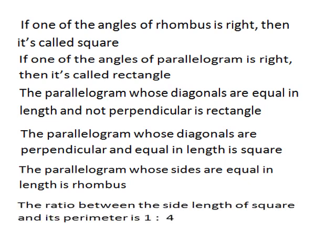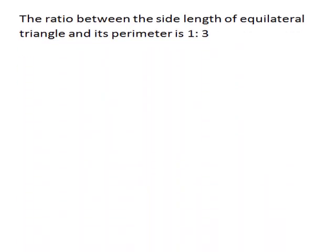The ratio between the side length of a square and its perimeter is 1 to 4. This is a very important point. The ratio between the side length of an equilateral triangle and its perimeter is 1 to 3. But if asked to find the ratio between the perimeter of an equilateral triangle and its side length, it will be 3 to 1. If asked the ratio between the perimeter of a square and its side length, it will be 4 to 1.